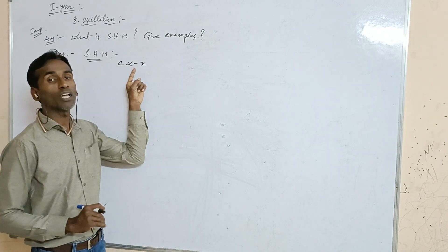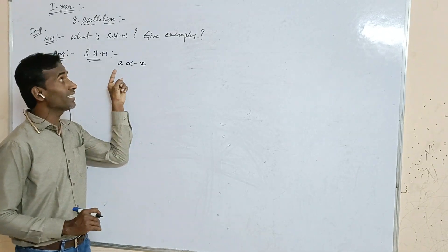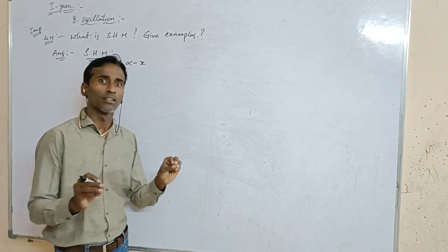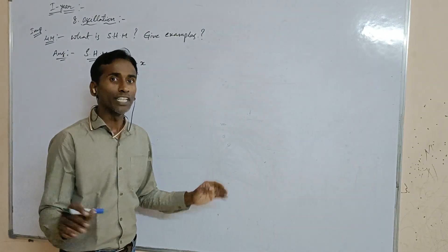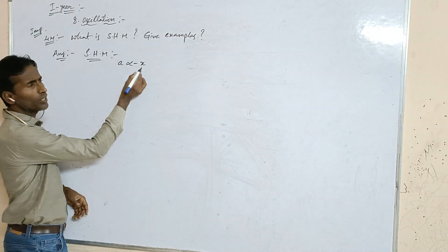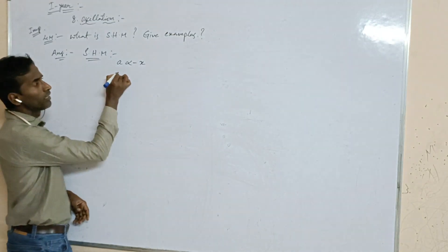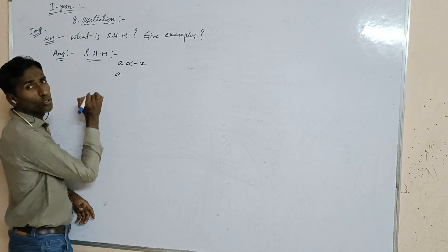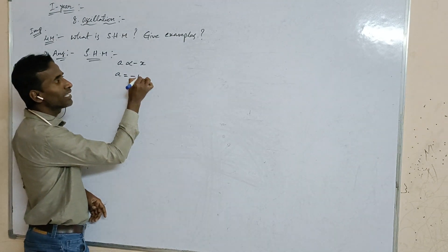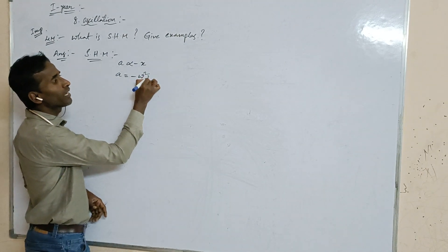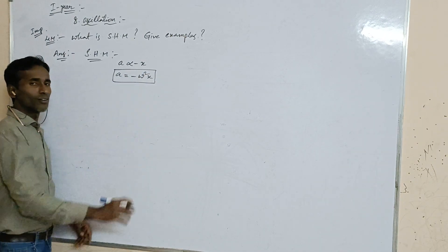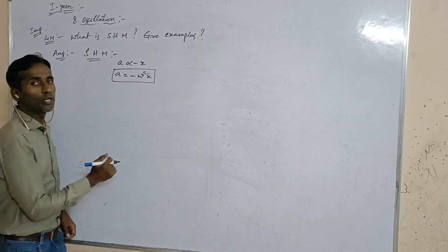The reason we use a negative sign is that acceleration and displacement are always opposite to each other. Removing the proportionality gives the constant, so: a equals minus omega squared times x. This is the equation of simple harmonic motion.